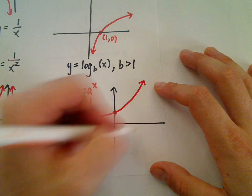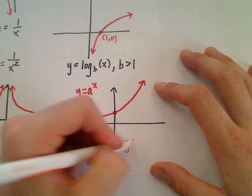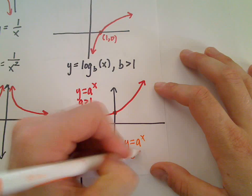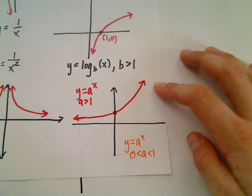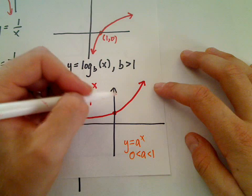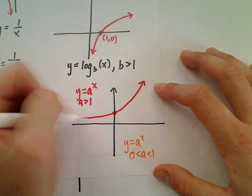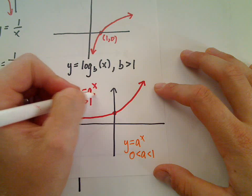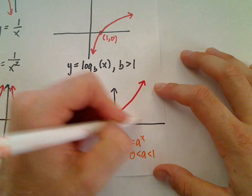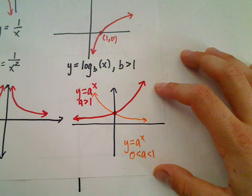If we graph the exponential function y equals a to the x, where the base a is between 0 and 1, it'll just be a reflection about the y-axis of this graph. And instead of getting bigger as you move left to right, it'll actually get smaller as you move left to right.